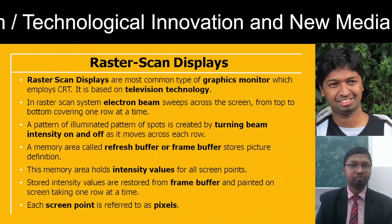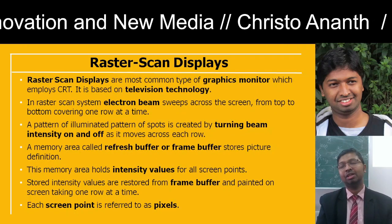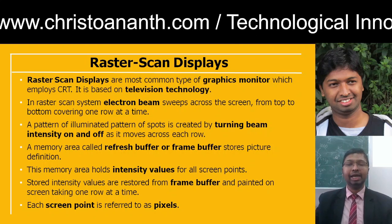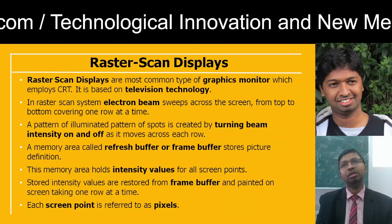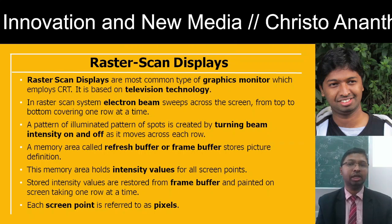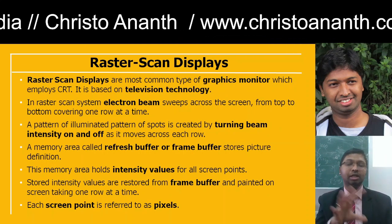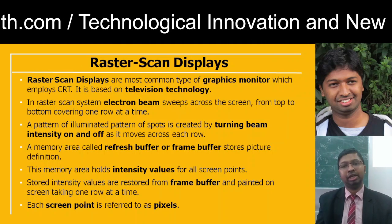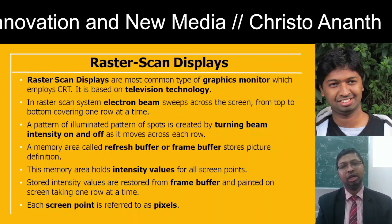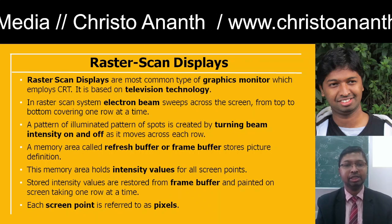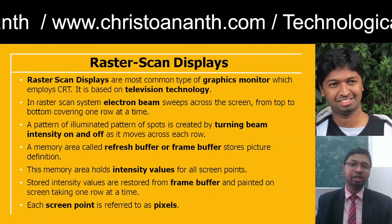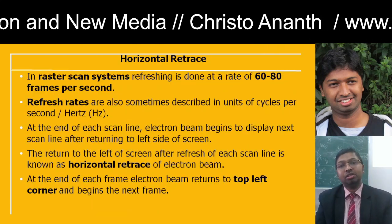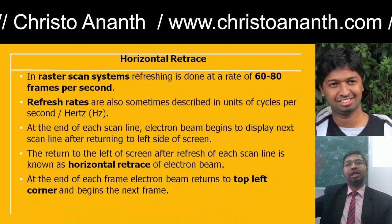Raster scan displays are graphic monitors that employ a cathode ray tube, based on television technology. In a raster scan system, the electron beam sweeps across the screen along horizontal lines from top to bottom, covering one row at a time. Illumination of patterns of spots is created by turning the beam intensity on and off as the raster scans across each row. A memory area called the refresh buffer or frame buffer stores the intensity values for all screen points, and each screen point is called a pixel.